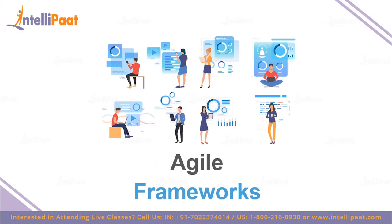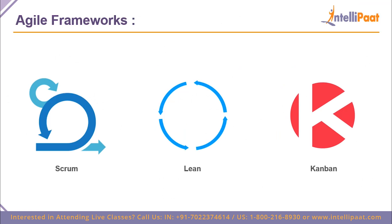Now let's discuss the different frameworks of Agile. With Scrum, you're focusing more on openness, focus, commitment, courage, and respect. In Lean, you focus on eliminating waste, amplifying learning, deciding as late as possible, delivering as fast as possible, empowering the whole team, building integrity, and seeing the whole process through. In Kanban, you focus on reducing multitasking, decreasing waste overall, putting the customer's needs first, and return on investment. These are just the three most popular frameworks — there are many more, and you can decide which one is best for you and choose accordingly.